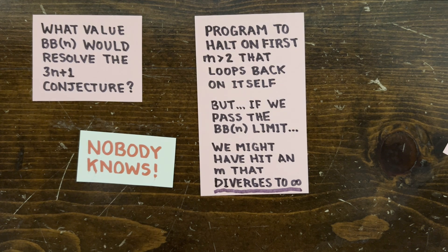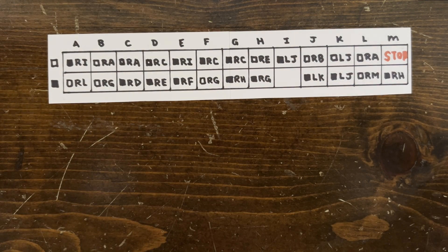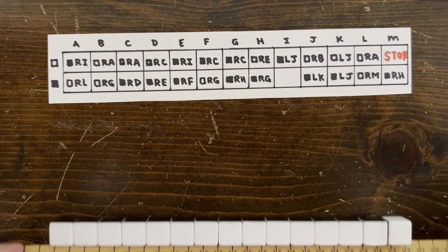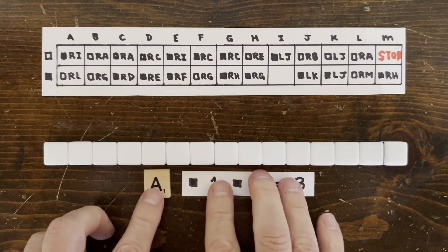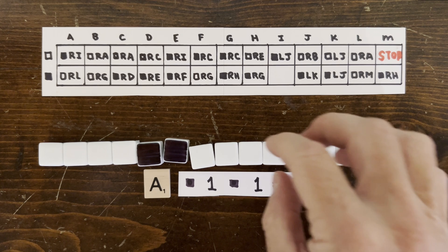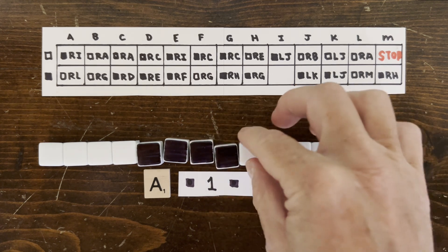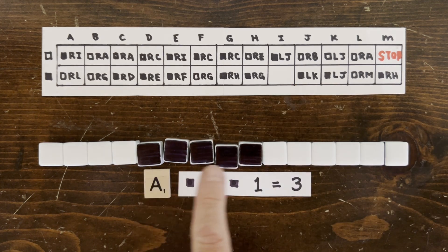Okay, last thing. We actually can write a program that follows the trajectory of a single start number down to 1 and then stops. The smallest program I've heard of, viewers please correct me, has 13 states.